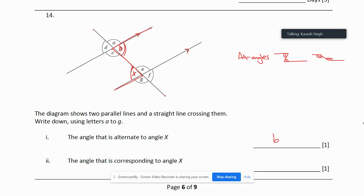And they are equal. Just remember the alternate angles are always equal. The next one is corresponding angle to x, which is also equal to x.